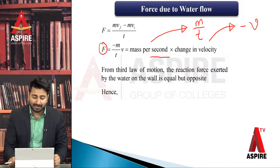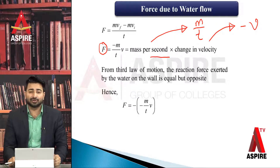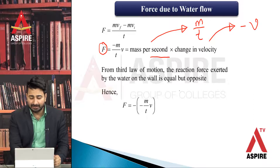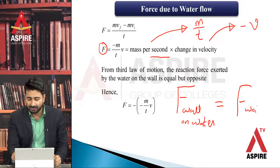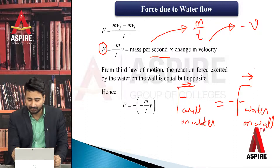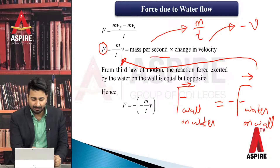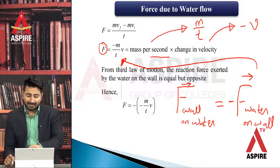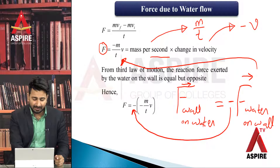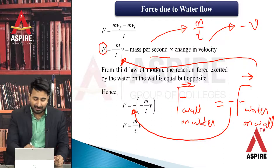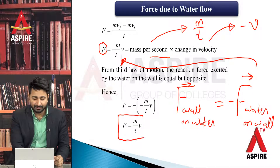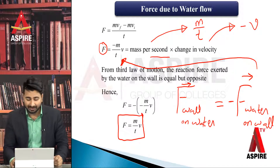Our topic title is 'force due to water flow' — we want to find the force that water exerts on the wall. By Newton's third law: the reaction force exerted by the water on the wall is equal but opposite. So F will be equal to minus of minus m over t into V. Therefore, F equals m over t into V — this is our final formula.